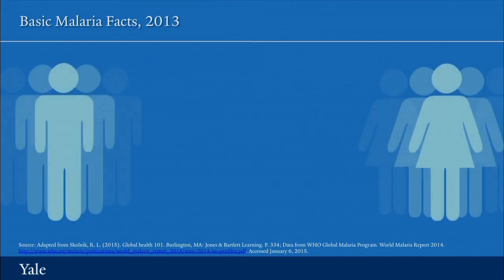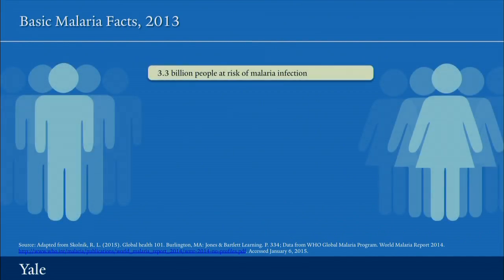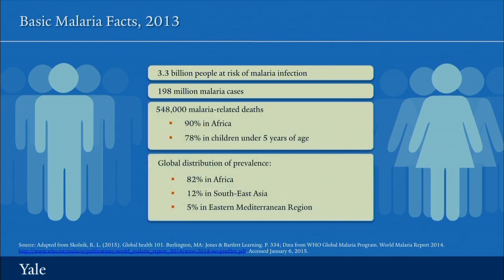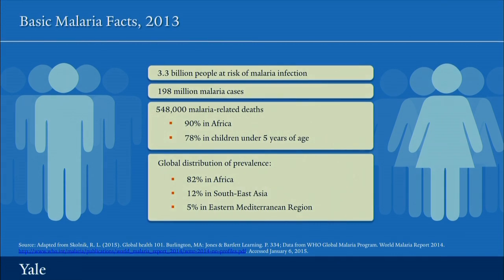Let's look at the burden of disease and some basic facts about malaria from 2013. There were about 3.3 billion people in the world in 2013 who were living in places where malaria was endemic, where they were at risk of malaria infection. There were almost 200 million cases of malaria that year. The number of malaria deaths is coming down substantially, but there were still almost 550,000 people who died of malaria in 2013. About 90% of the total deaths were in Sub-Saharan Africa, and almost 80% of total deaths occurred in children under five years of age.